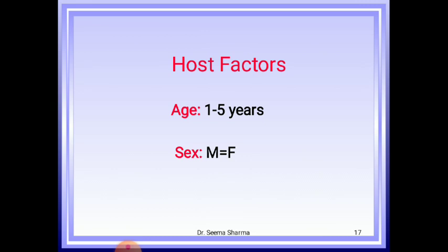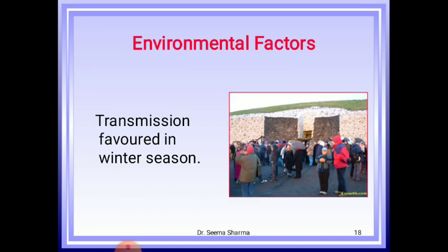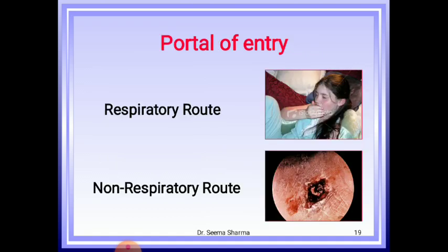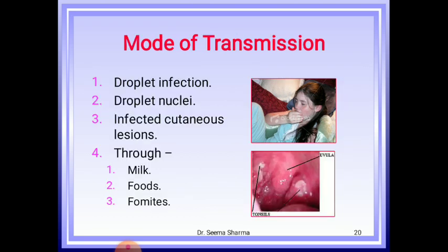Host factor: commonly children 1 to 5 years of age are involved, with equal incidence in males and females. Environmental factor: cases occur in all seasons although winter favors spread. Portal of entry: the common route is respiratory, but sometimes the portal of entry may be the skin where cuts, wounds, and ulcers not properly attended may get infected with diphtheria bacilli. Mode of transmission: nasopharyngeal secretion in the form of droplet infection or droplet nuclei, infected cutaneous lesions, or through milk, food, and fomites.